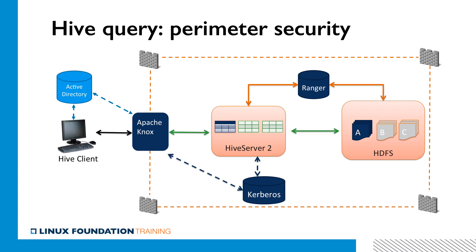Clients such as our user Joe will connect to Knox using a standard user ID and password combination, and let Knox create the necessary Kerberos tokens based on those credentials. This already looks much more secure, but let's go one step further and introduce encryption for data in motion — anything that travels on the network — and data at rest — anything that is actually being stored on disk.